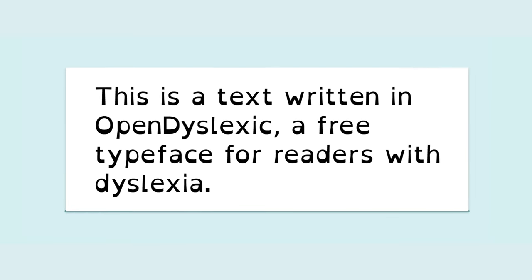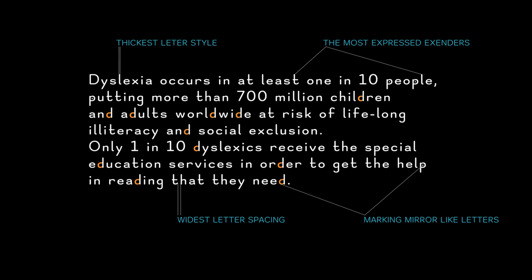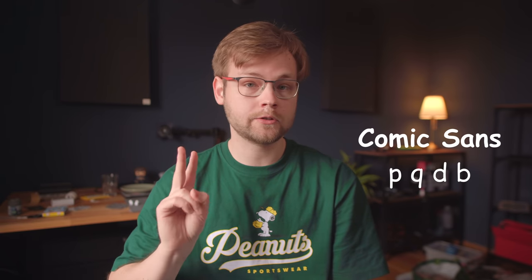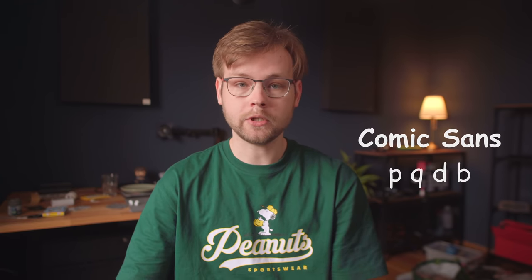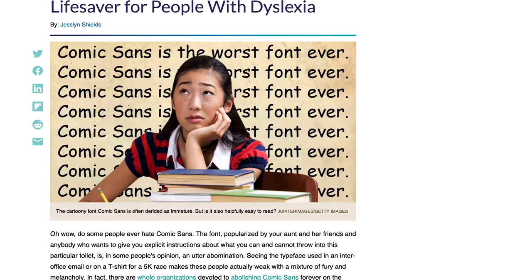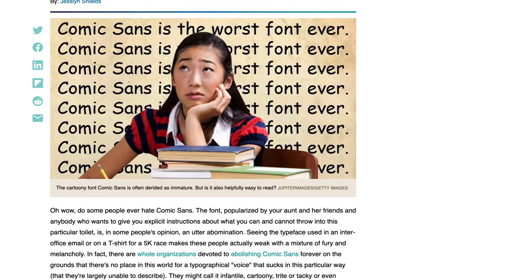One more thing I learned from Toshi Omagari's description of Comic Code is that Comic Sans is actually very easy to read for people with dyslexia. It's no secret that fonts with irregular characters are easier to read for dyslexic people, and Comic Sans is very irregular. Furthermore, a lot of fonts use mirroring to create new characters — for example, in many fonts P is just a mirrored Q — whereas Comic Sans only has two mirrored characters, D and B. Because of that, a lot of reputable dyslexia organizations recommend Comic Sans as the optimal font for dyslexic readers.